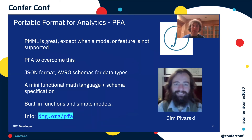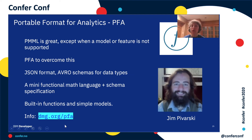Unfortunately, there are a couple of problems with PMML. One problem is that PMML describes your model — but what if you have some kind of new model which is not yet described by PMML? You can use extensions, which PMML allows everywhere, however if you use extensions you lose the portability, which is one of the main advantages of PMML. Another problem is that it uses XML, and nowadays people prefer JSON format. So about six years ago, Jim Pivarsky created a new format called Portable Format for Analytics, or PFA. It is designed with the experience of PMML in mind — a kind of mini functional math language that describes the scoring procedure rather than the model itself — and of course uses JSON format. It has many built-in functions and simple models that you can use as building blocks to implement your scoring algorithm.